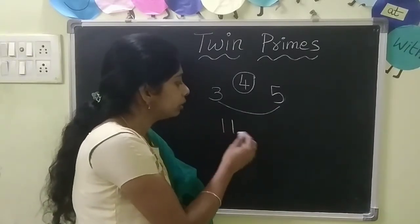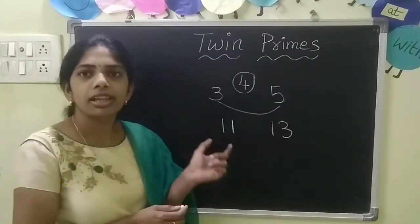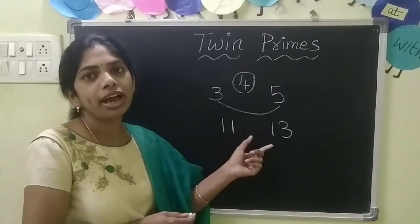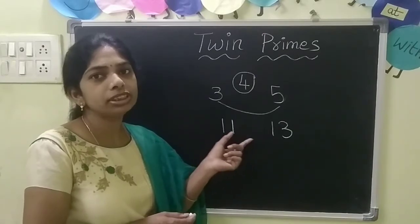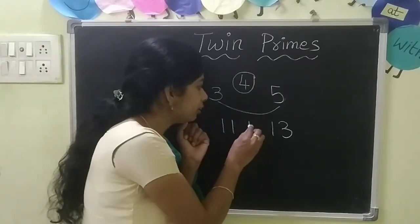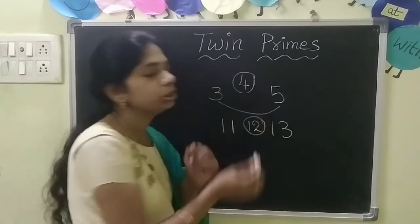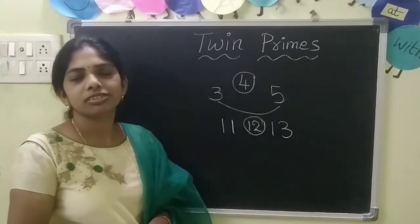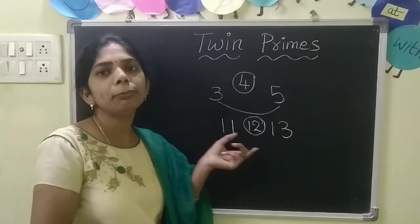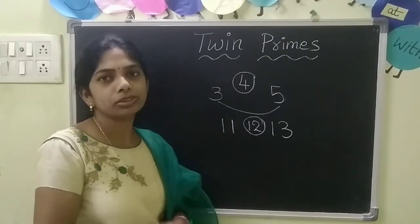Suppose 11 and 13. 11 is a prime number and 13 is also a prime number. And there is only one composite number between them. What is it? 12. And so these prime numbers are called twin primes — 11 and 13 are twin primes.